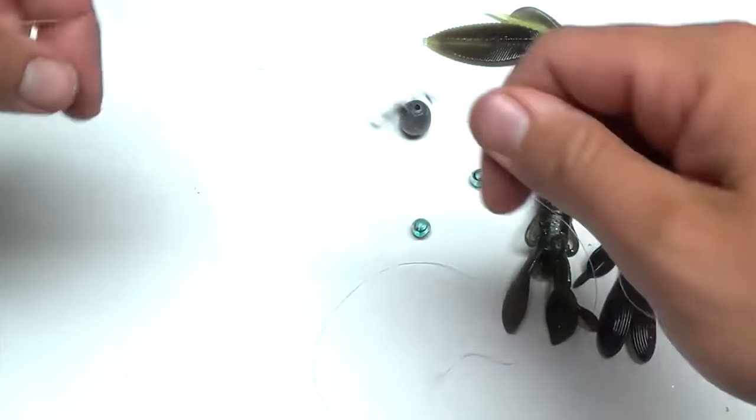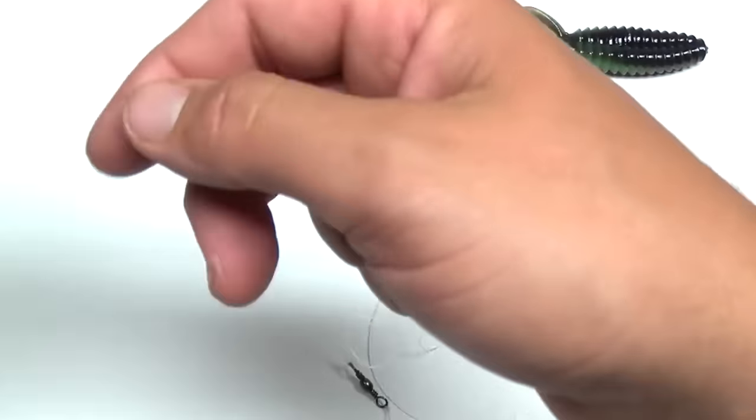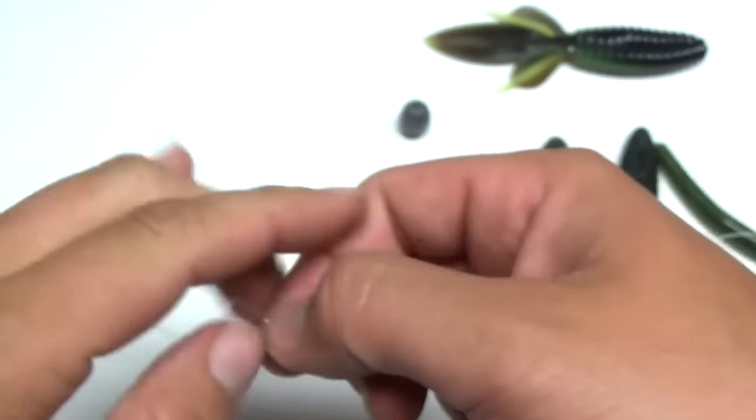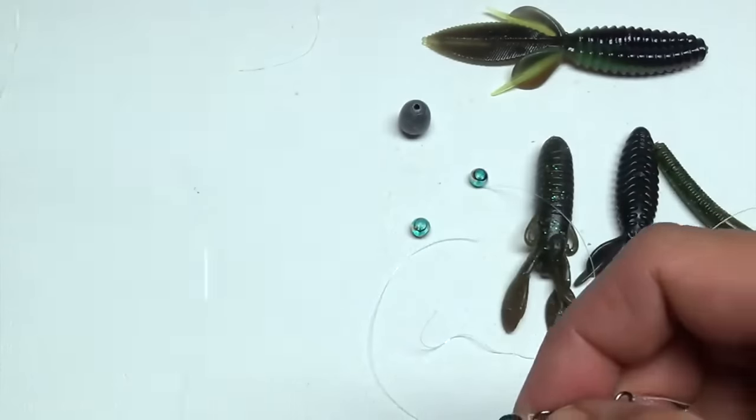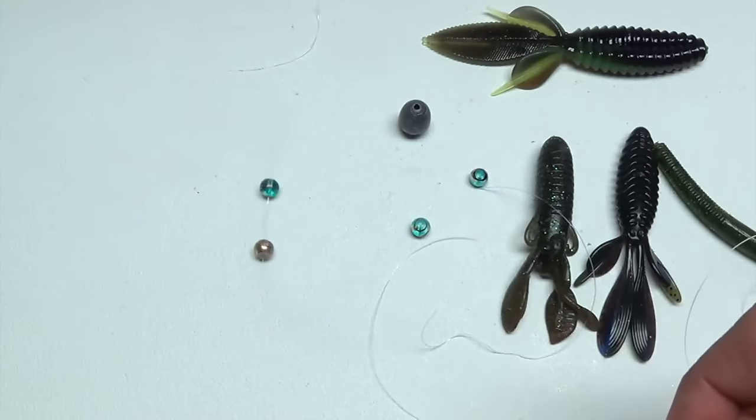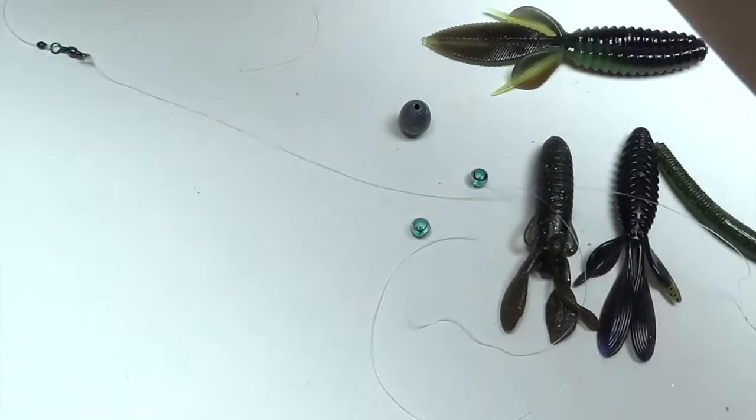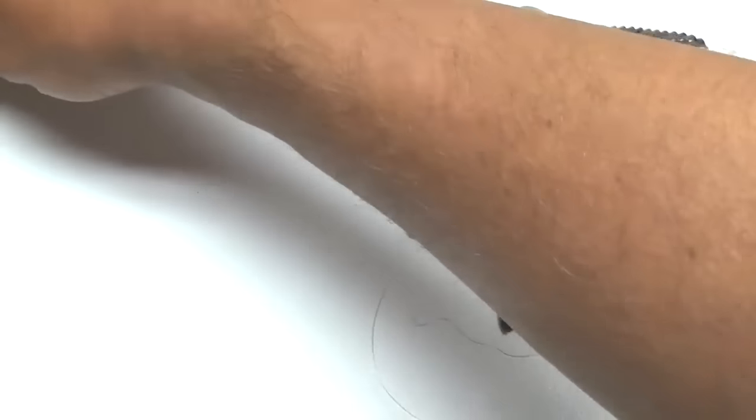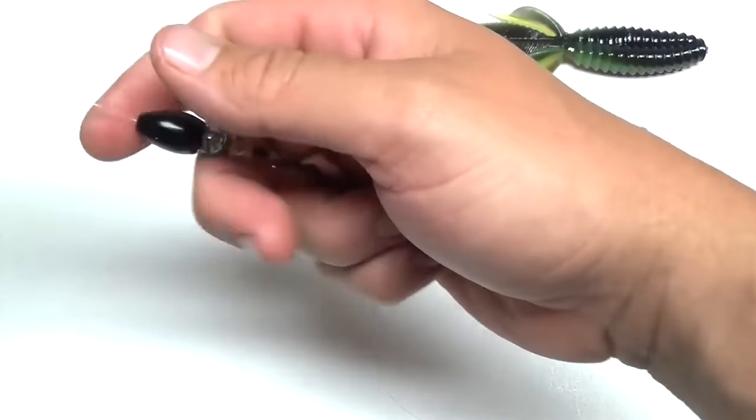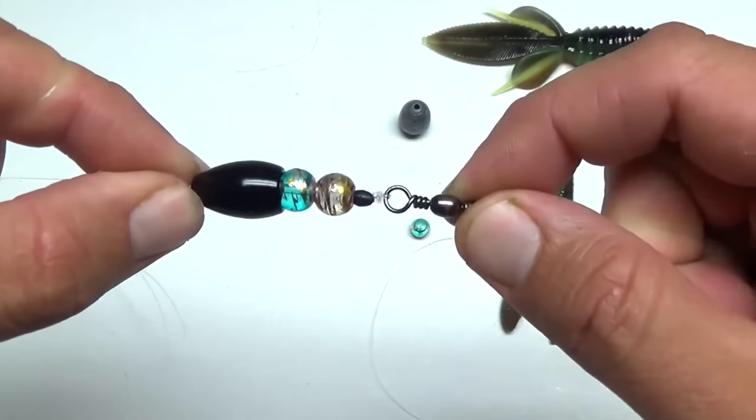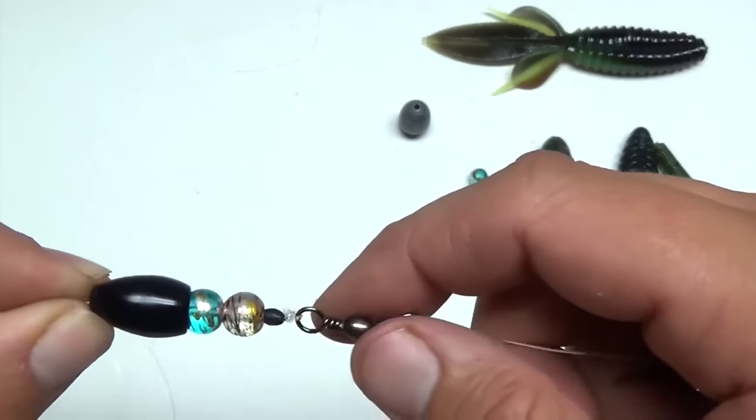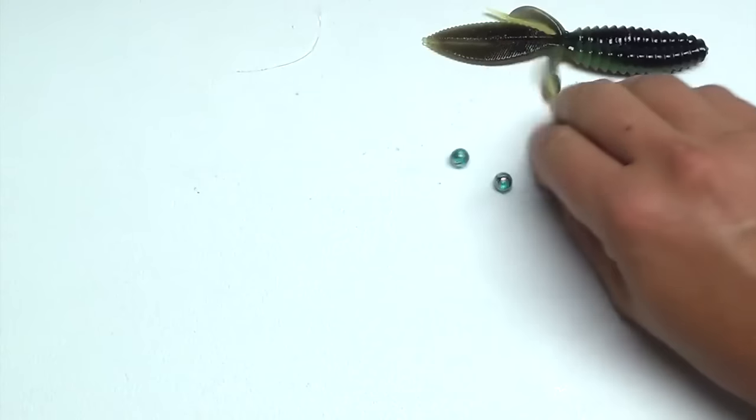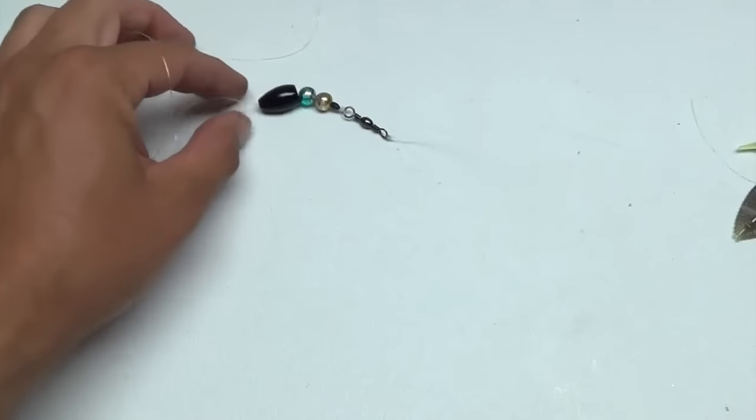Okay. And then if you use the rubber stop, just move that down all the way to where it's touching your knot. That'll just keep your bead and weight from hitting on that actual knot. It'll save you from breaking off and losing fish and having to retie all the time. So the finished product then looks like this.